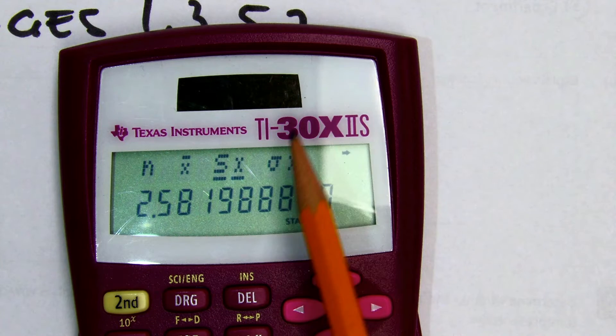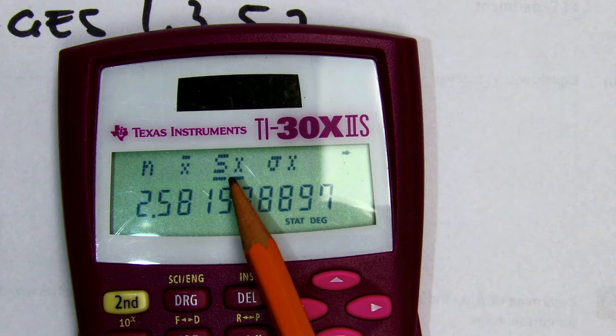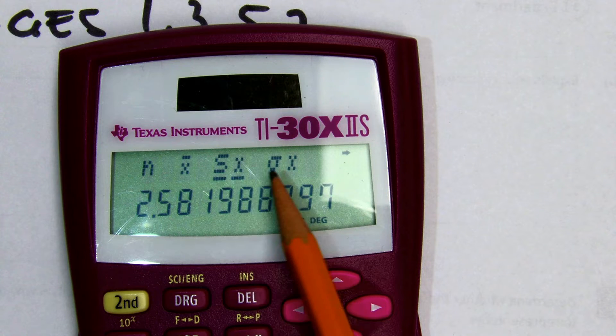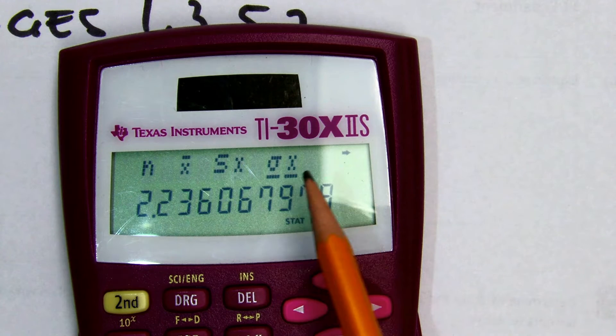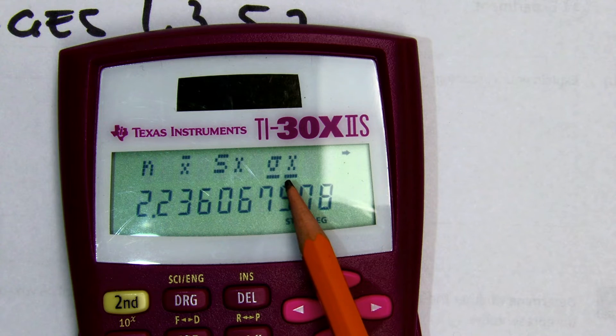SX is your sample standard deviation. And sigma X here is your population standard deviation.